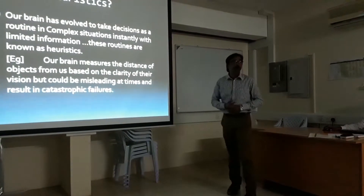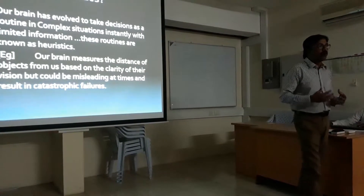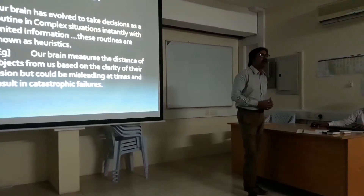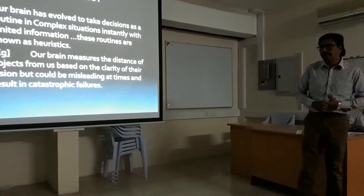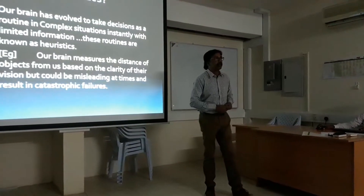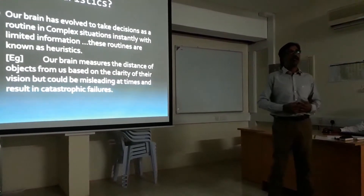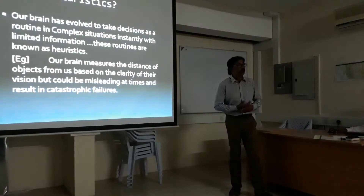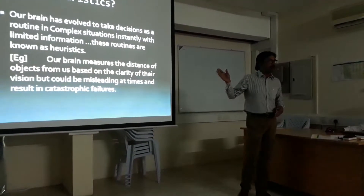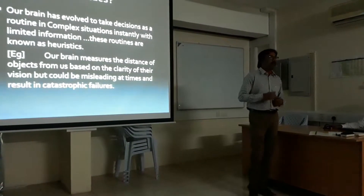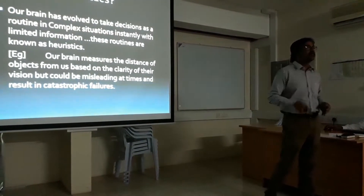More precisely, heuristics is how our brain has evolved to solve complex problems with a limited amount of information instantly, on a routine basis. Such routines are called heuristics. For example, when we throw a ball, our brain measures the distance of the object based on the clarity of the vision received. Sometimes it may mislead, resulting in catastrophic failures — like a pilot landing a flight on a foggy day, which may lead to a catastrophic failure or a safe landing. Again, heuristics is the secret behind it.